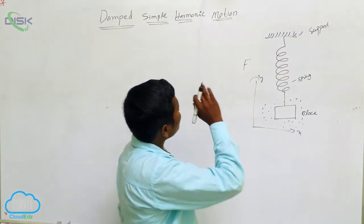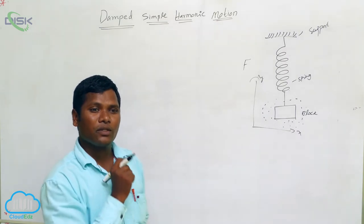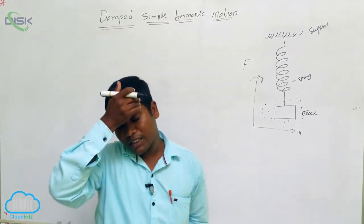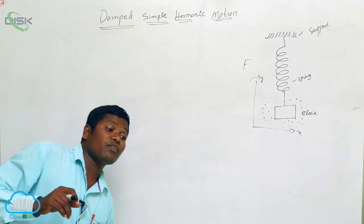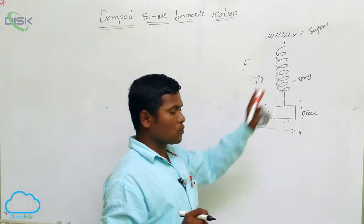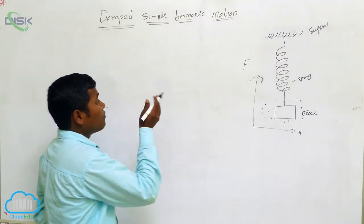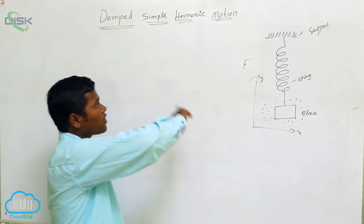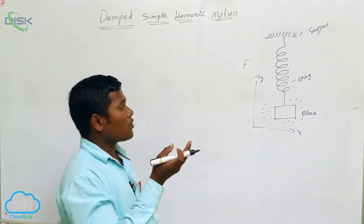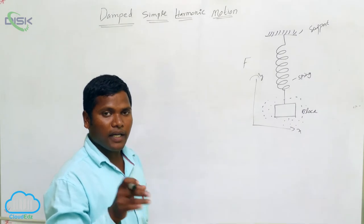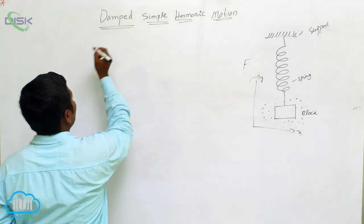If we consider a simple pendulum, after some time it will come to a rest position. Why? Because in this world, many forces act on any object: gravitational force, normal force, and frictional force. In this case, two forces are working — restoring force and frictional force — and that is what makes it damped harmonic motion.